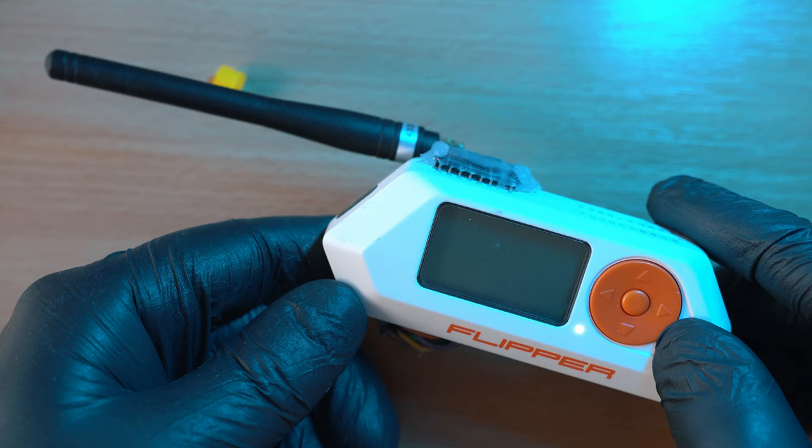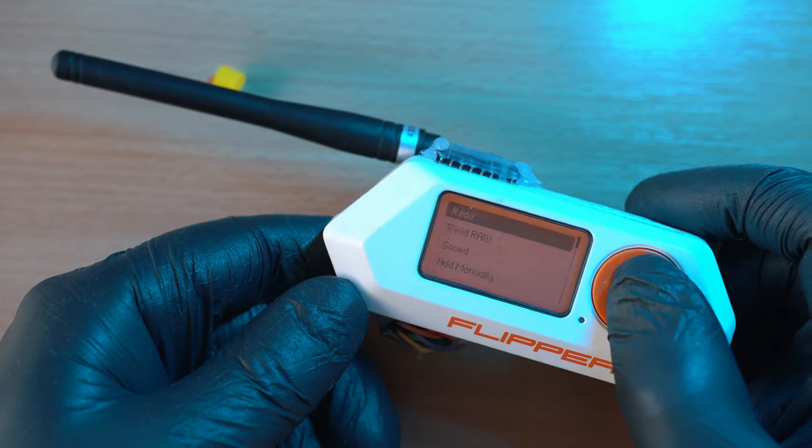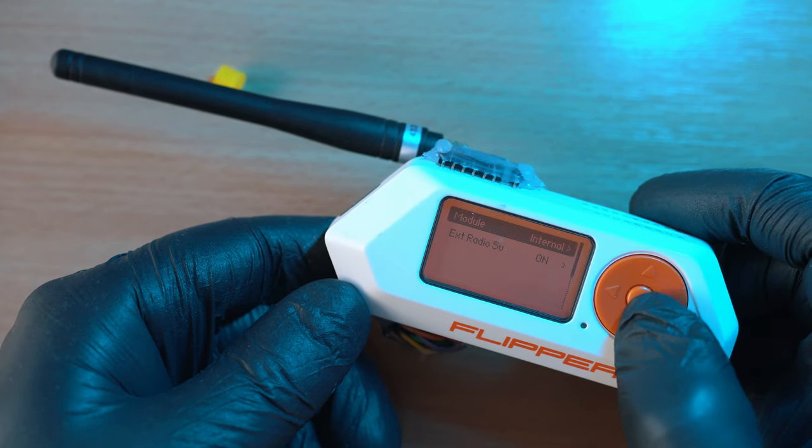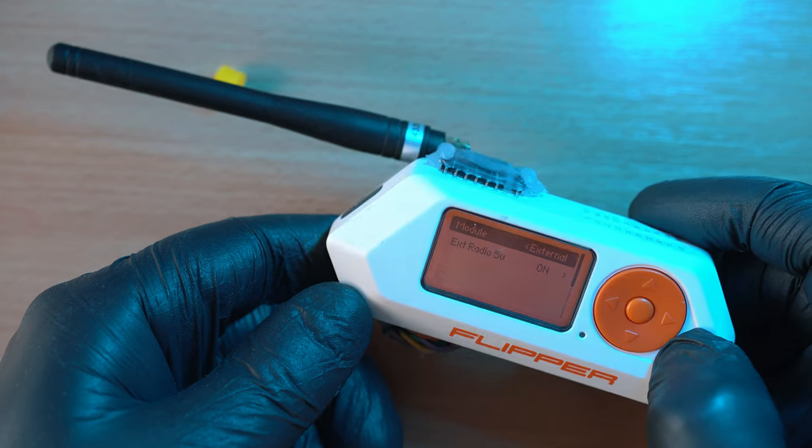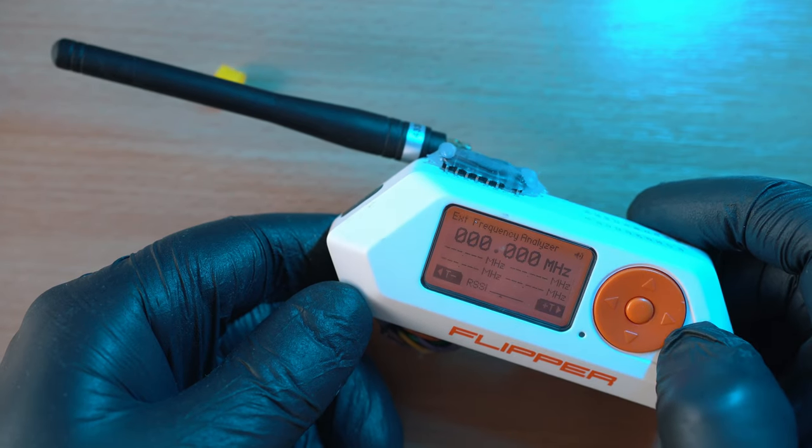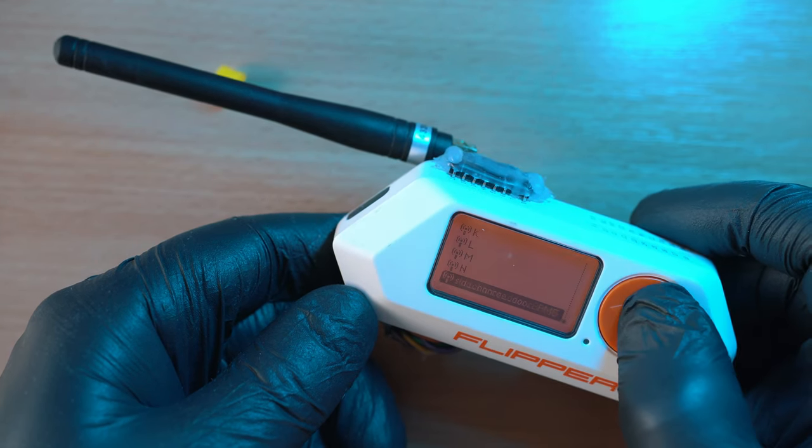And power on the flipper zero. Go to sub gigahertz, radio settings, make sure 5 volts is on and module is on external. Go frequency analyzer, I will lower the RSSI and boom all works.